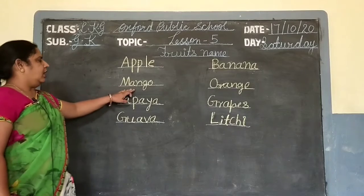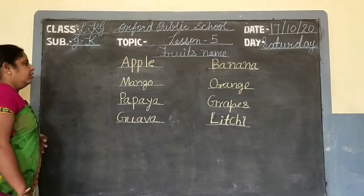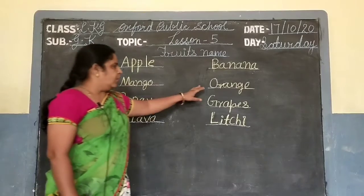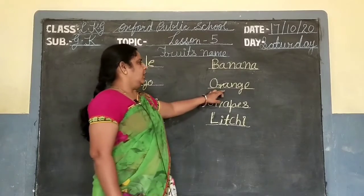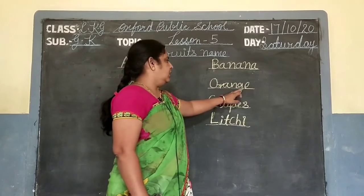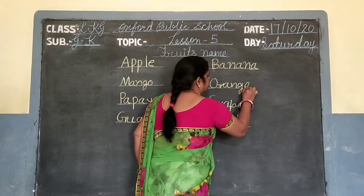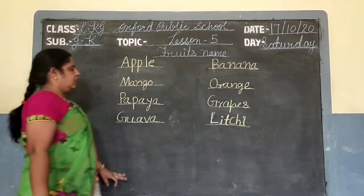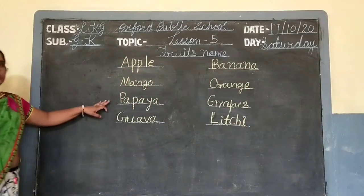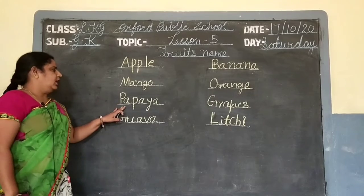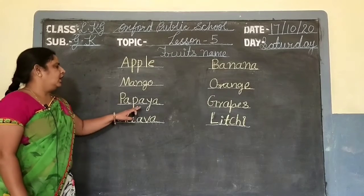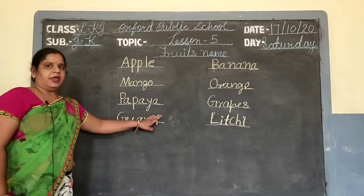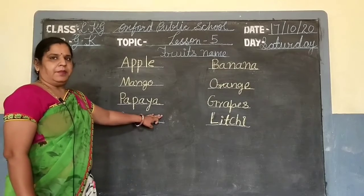M-A-N-G-O. Mango means आम। O-R-A-N-G-E. Orange. Orange means संतरा। P-A-P-A-Y-A. Papaya. Papaya यानी पपीता।